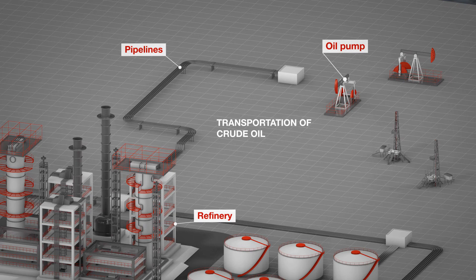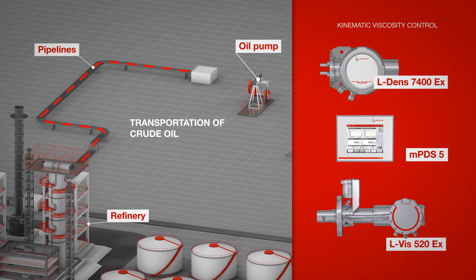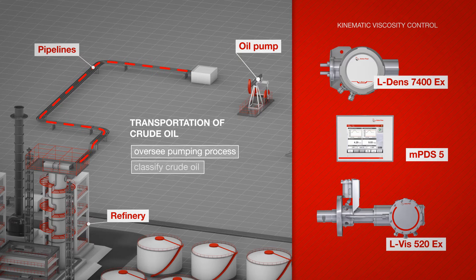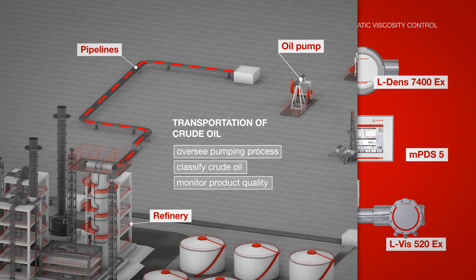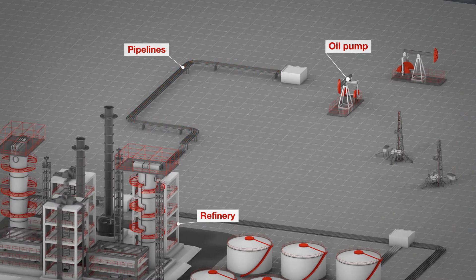After the main separation of crude oil from gas, water, and various contaminations, the different kinds of crude oils are transported via pipelines to a refinery. With Anton Paar's kinematic viscosity control solutions, you can easily oversee your pumping processes, classify different kinds of crude oil, and continuously monitor your product quality.